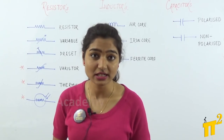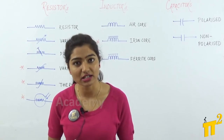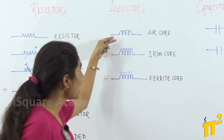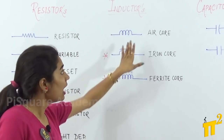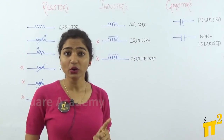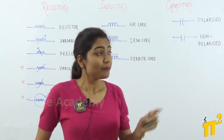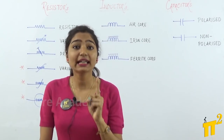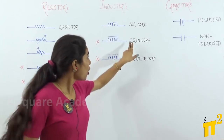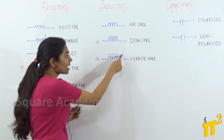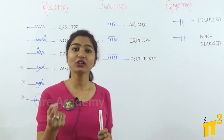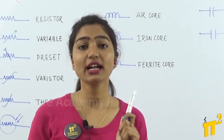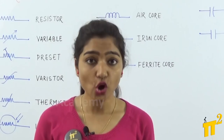That was all about resistors. Now let's move on to inductors. When speaking of an inductor, there are two categories: a category of air core, which uses a non-magnetic material, and a category of magnetic material core. The two lines in the symbol indicate that the core is a magnetic material, and if there is no line, the core is of a non-magnetic material.